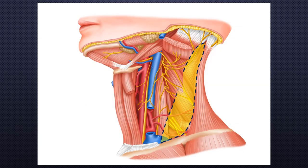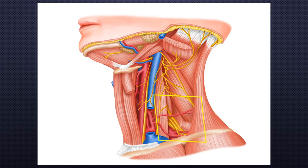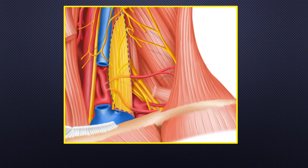The interscalene brachial plexus is the brachial plexus located in the posterior cervical triangle, within an interscalene fascial plane. This illustration shows a deep layer of the posterior cervical triangle — I removed the SCM muscle. The yellow-colored area is the posterior cervical triangle.